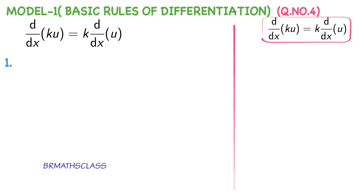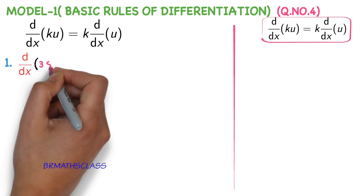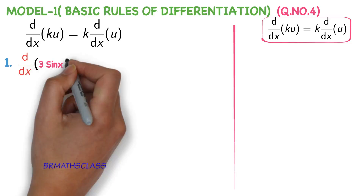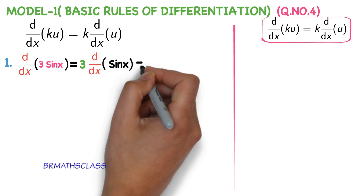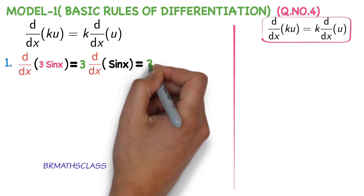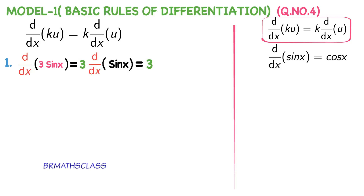Let's see an example so that you can understand this very easily. d by dx of 3 into sin x, where 3 is constant — that means k is 3 here. As per the formula: 3 into d by dx of sin x. d by dx of 3 sin x is 3 into d by dx of sin x. That is equal to 3 into... Now, you must know the derivative of sin x. Derivative of sin x is cos x.